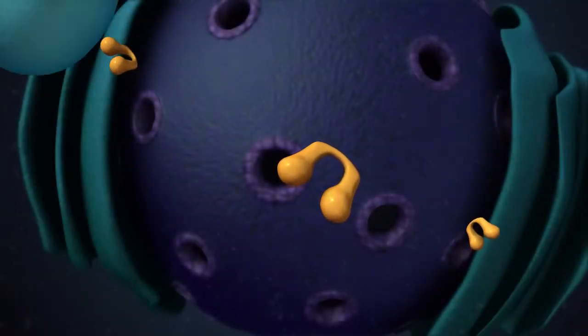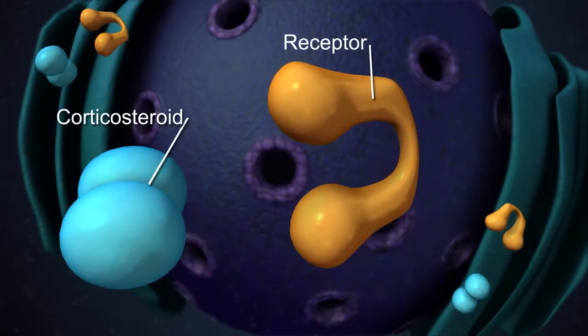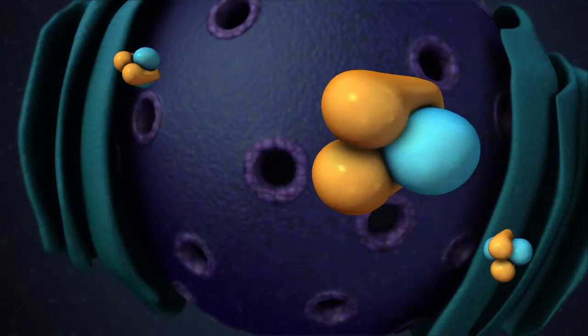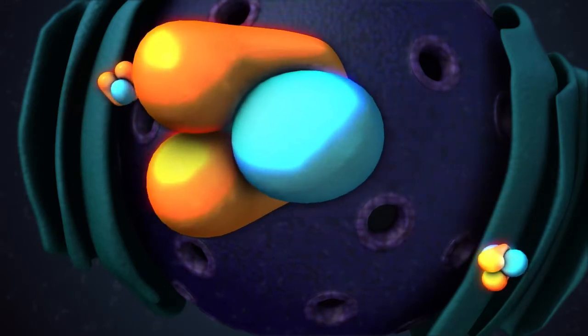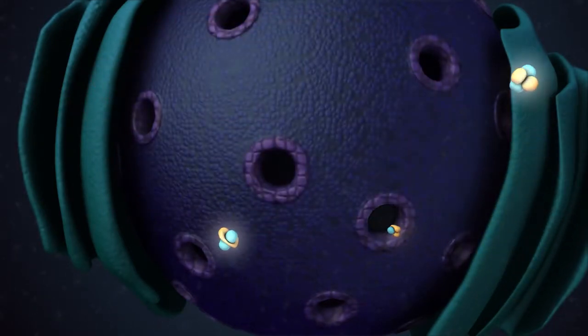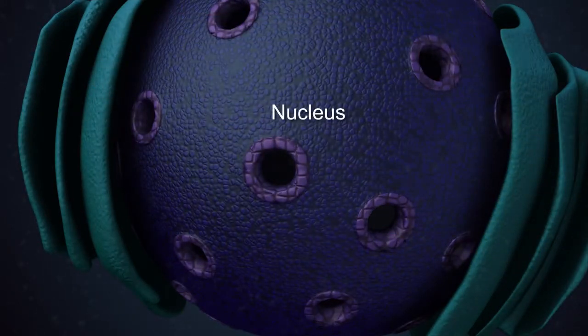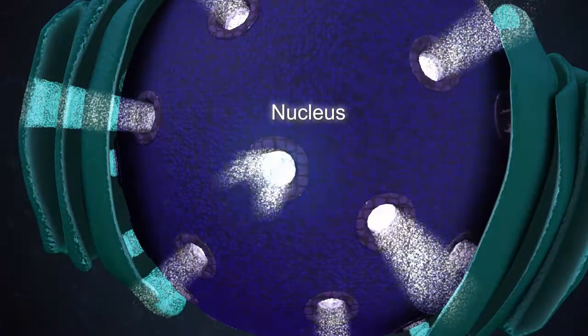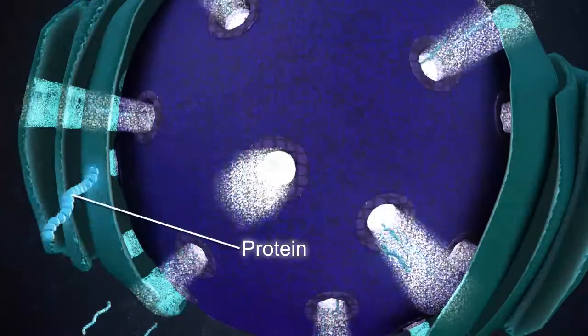Corticosteroids bind to steroid receptors inside cells and form a tightly joined group. When the steroid receptor group is activated, it moves inside the cell's nucleus where it is able to control the cell's ability to make proteins.